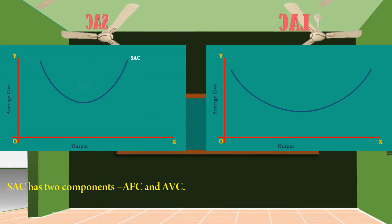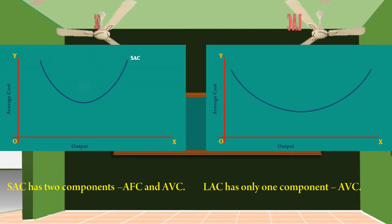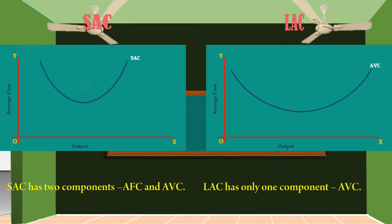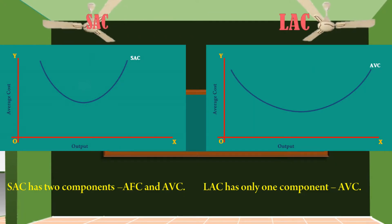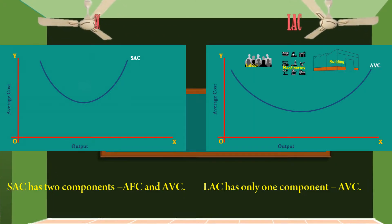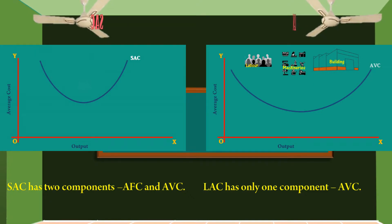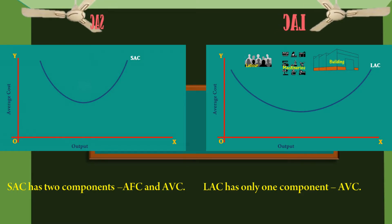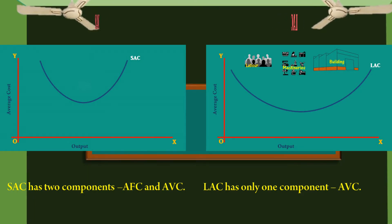Long run average cost curve consists of only one component. It is average variable cost. In the long run all costs are variable. Hence, long run average cost is formed by the cost incurred on the variable factors.